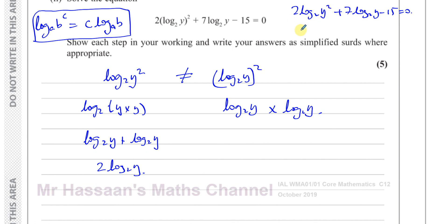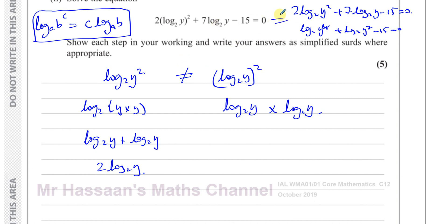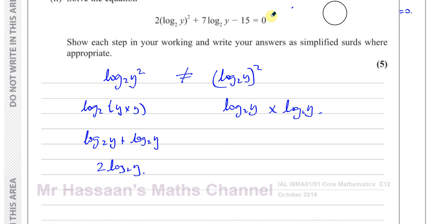Some people incorrectly treat this as 2 log base 2 of Y squared plus 7 log base 2 of Y minus 15 equals 0 — but that's wrong. You cannot move the 2 up as a power on Y when it's the entire expression that is squared. These two forms are totally different and give different answers. This is a very important point that many people get wrong.